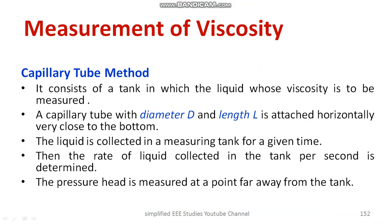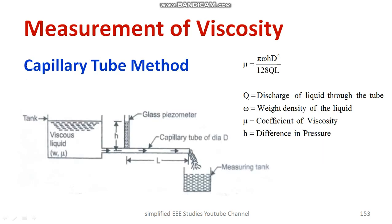The setup comprises a tank filled with liquid whose viscosity is to be measured. A capillary tube with diameter D and length L is attached horizontally, very close to the bottom. The liquid is collected by the measuring tank for a given time. The rate of liquid collected per second is determined, and the pressure head is measured at a point far from the tank. Q is the discharge in cubic meters per second, omega is the weight density of the liquid, and mu is the dynamic viscosity.